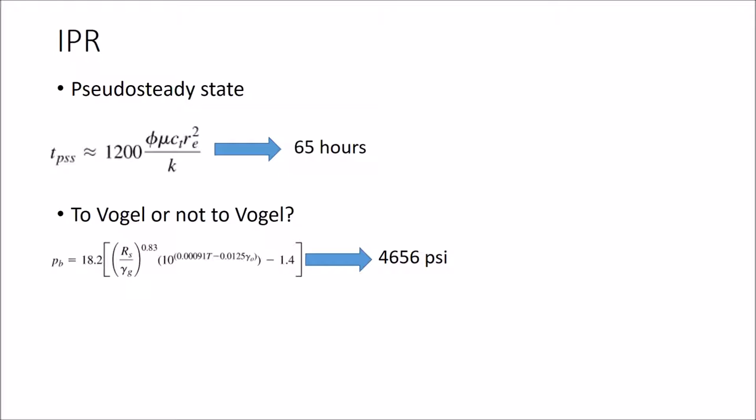For our reservoir, we will be assuming pseudo-steady state conditions after the initial transient condition. Since the initial transient condition is only 65 hours and is relatively insignificant to a possible 10-year production, we will neglect transient flow from any future calculations for simplicity.